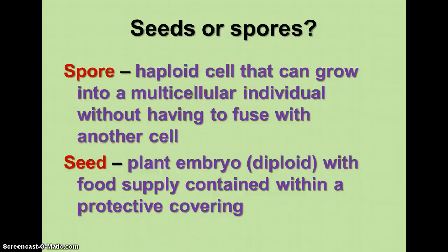We need to differentiate between seeds and spores. A spore is a haploid cell that can grow into a multicellular individual without having to fuse with another cell; spores are used for reproduction in non-vascular plants and seedless vascular plants. Seeds are plant embryos — diploid, with a food supply contained within a protective covering — and are produced by vascular plants that reproduce with seeds.